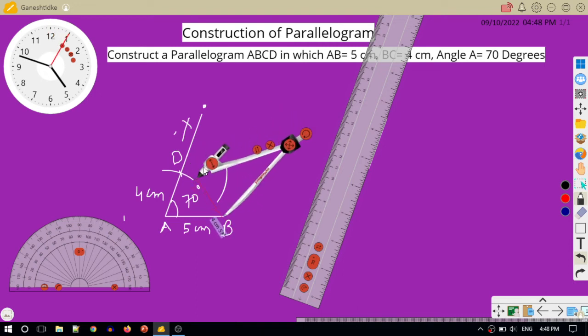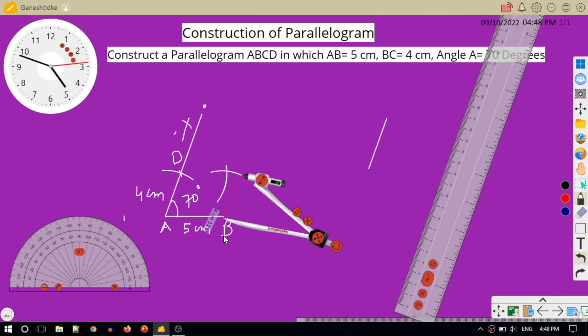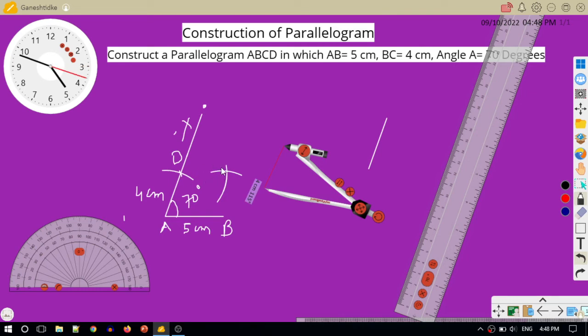And with center B and radius equal to 4 centimeters, I will draw an arc. So this is my point C, where the two arcs intersect.